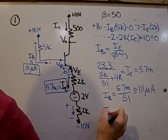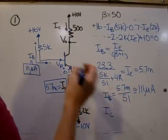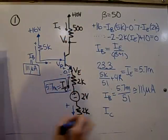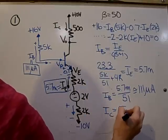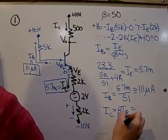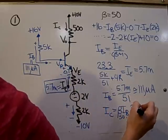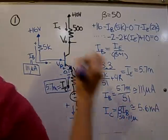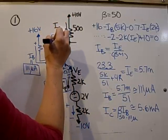IC is also related, so IC can be found either by the summation of these two currents with this one, or by using beta IB, which will be 50 times the 111 micro, and gives approximately 5.6 milliamps. So this ends up being 5.6 milliamps.